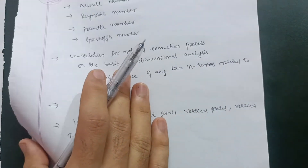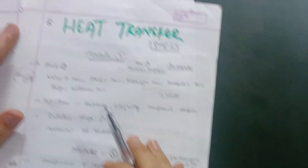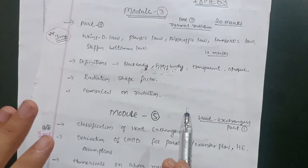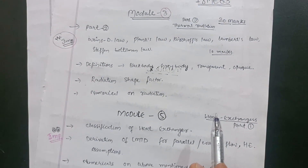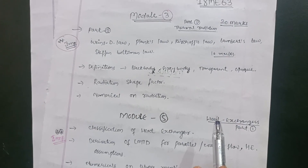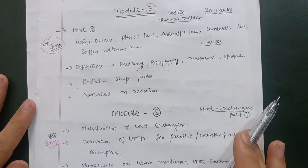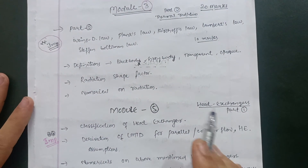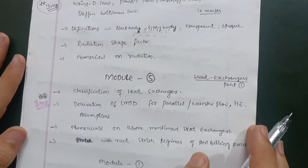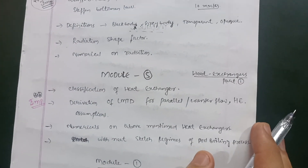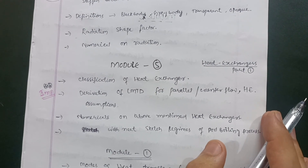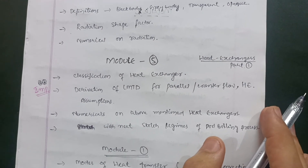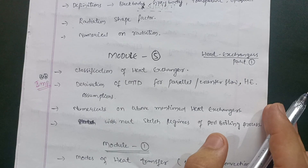If you want to just pass this subject, go for Module 3 first, then Module 5, then Module 1 — these three modules are enough to pass. If you want to score well, go through all the modules and prepare both the numerical and theory parts. I hope this video is beneficial. Please share it with your friends so more students can benefit, and don't forget to like and subscribe to this channel. Thank you.